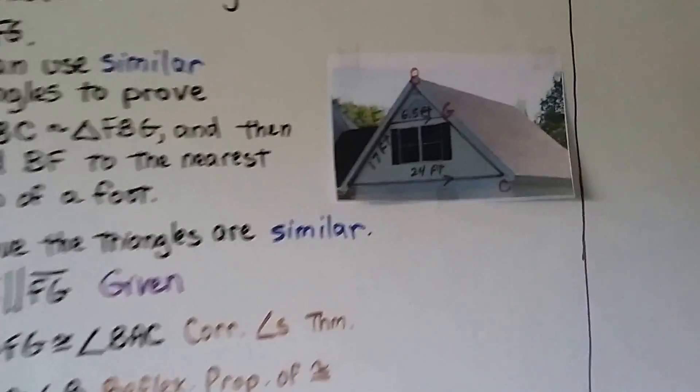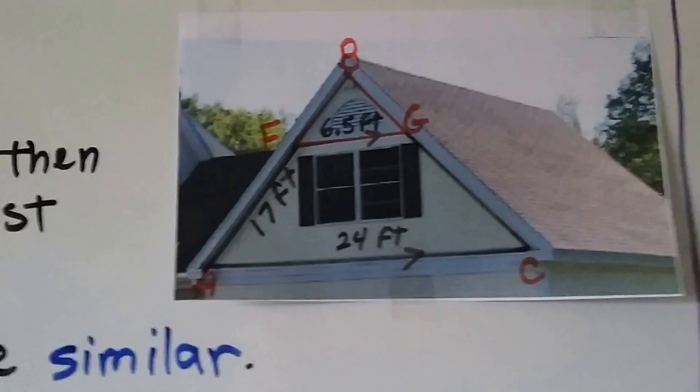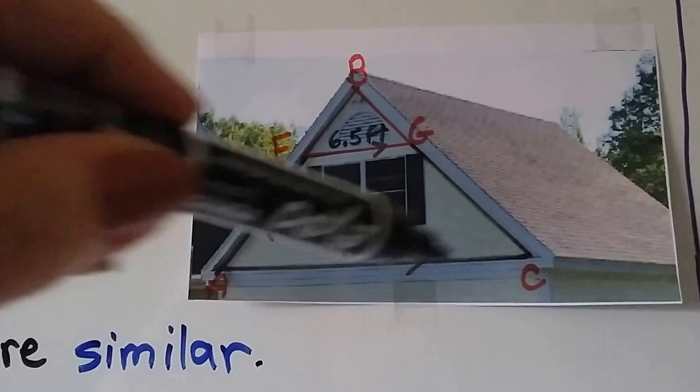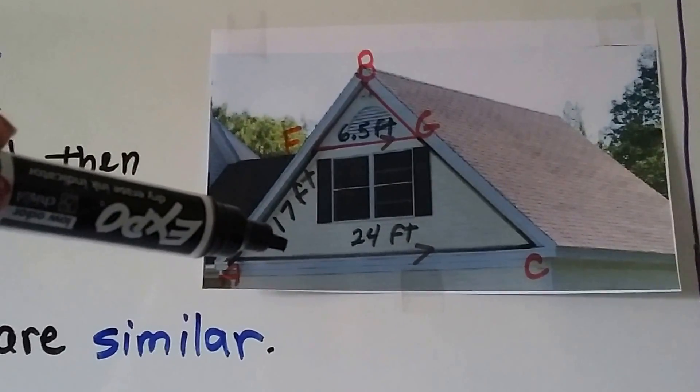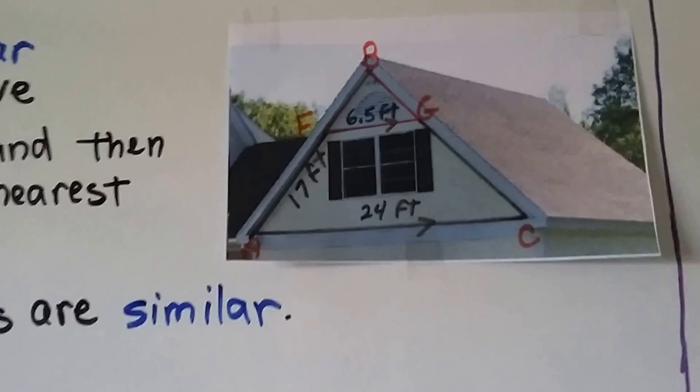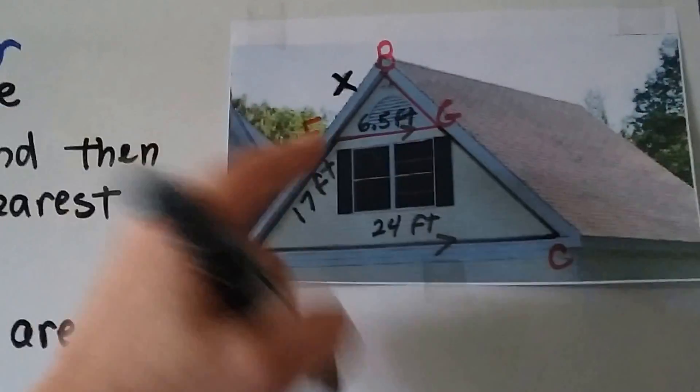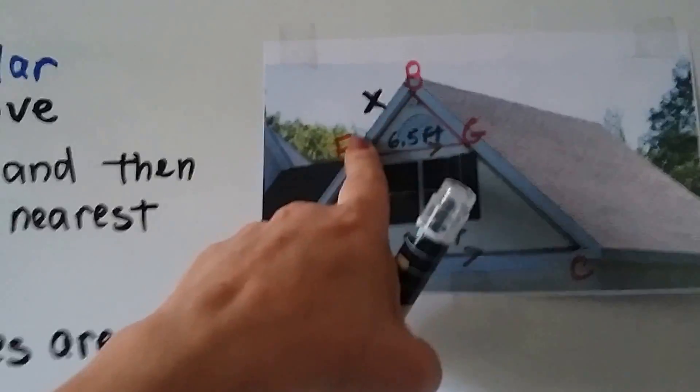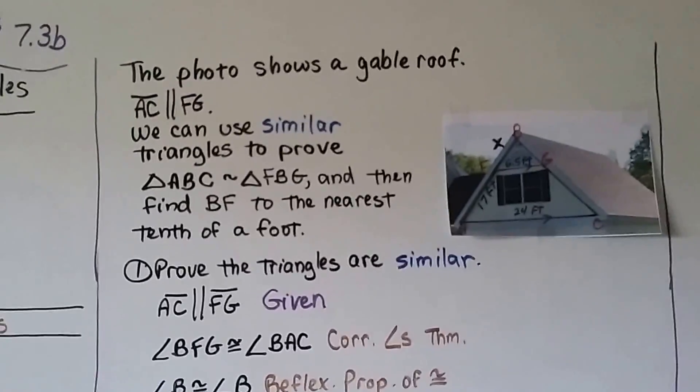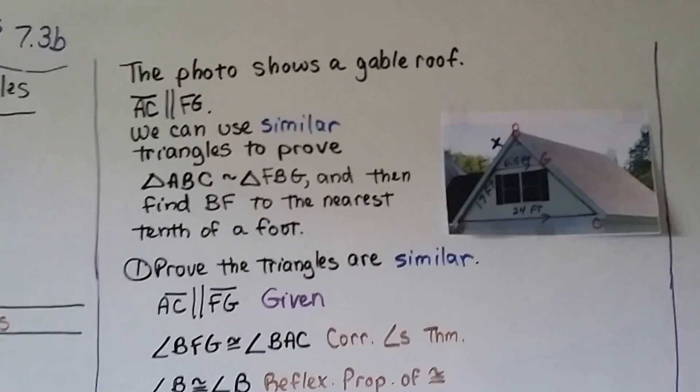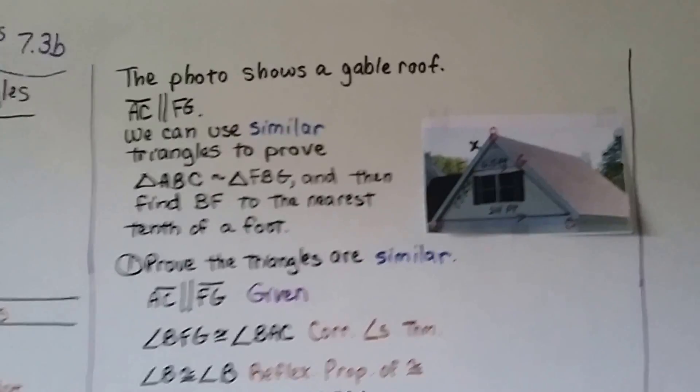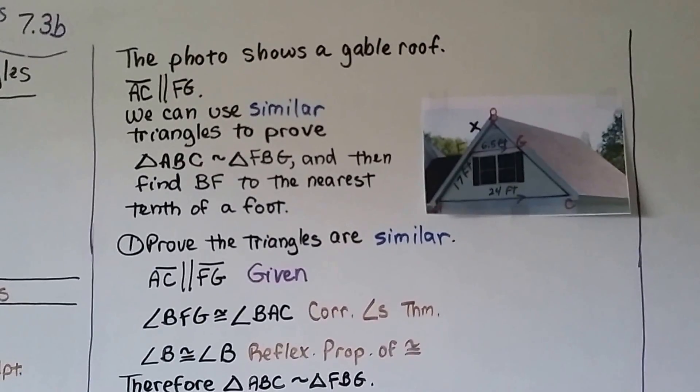Now, I hope you can see this. Take a look at this picture here. We've got AC right here. This 24 feet is parallel to FG, the 6.5 feet. And we're going to try to find this right here, BF. So the photo shows a gable roof, and AC is parallel to FG. We can use similar triangles to prove triangle ABC is similar to triangle FBG, and then find BF to the nearest tenth of a foot.